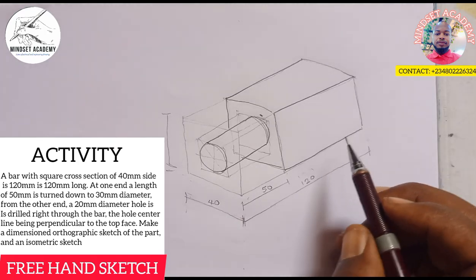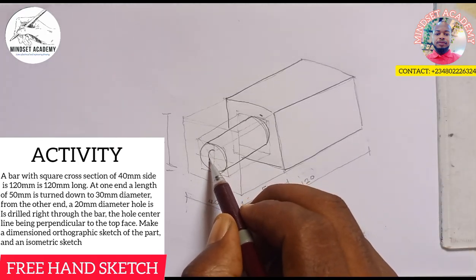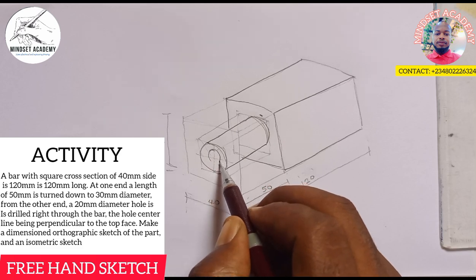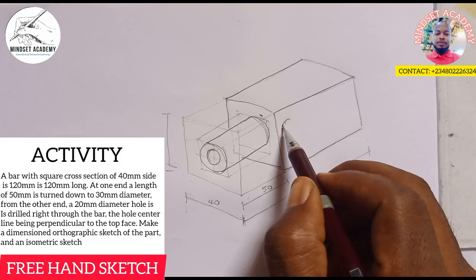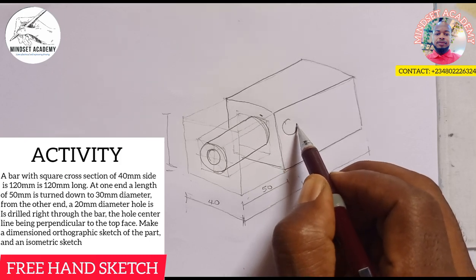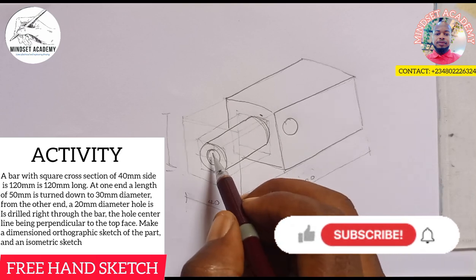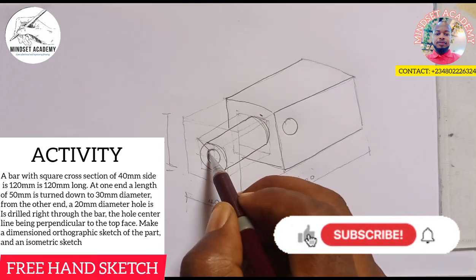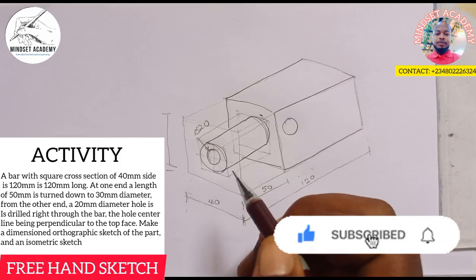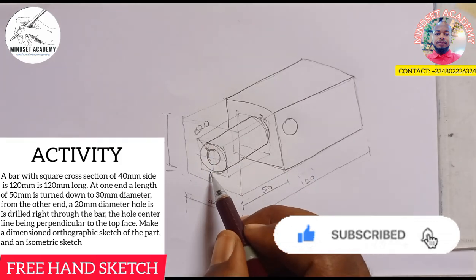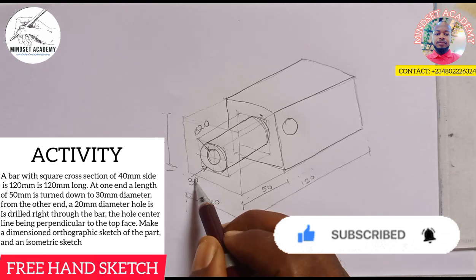You now said a hole of 20 millimeter is drilled inside of it this way, perpendicular to it at the side here. The hole diameter is 20 millimeter diameter, while this particular one you see here is 30 millimeter diameter.